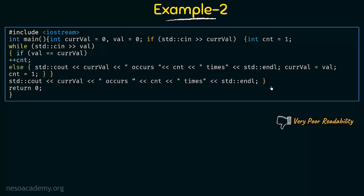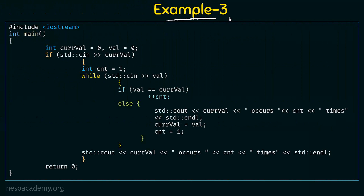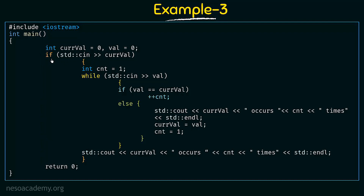Now let us take this program and write it with proper indentation and formatting to see what difference it makes. Here in this third example, this is the same program written with proper indentation and formatting. We have the header and the main function, with the starting curly brace denoting the start of main, and I have ended main over here — I can very clearly see that main runs from here to here. I have given some space after the curly brace and everything inside main maintains that space. The variables are declared, and here we have an if statement. The if block starts here, and whenever I start an if block I come to the next line, open the curly brace, and give some space. I start the if block here and end it here — I can easily see that if runs from here to here.